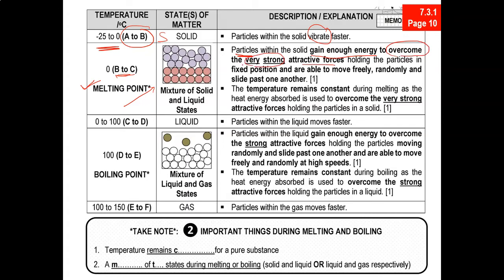The energy that the particles gain is used to overcome the very strong attractive forces. Why is it very strong? Because during melting, the solid changes state to become a liquid, and the solid particles are held together very strongly by very strong attractive forces. As they gain more energy, they begin to be able to slide freely and randomly and slide past one another. This is what happens during melting — quite an important concept to know.